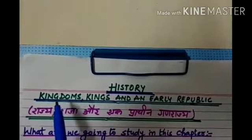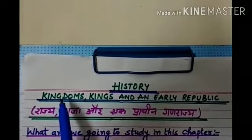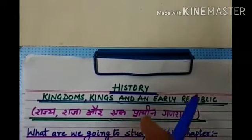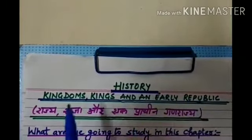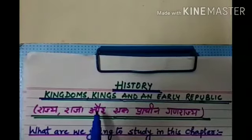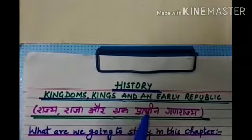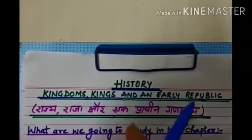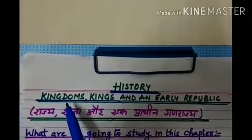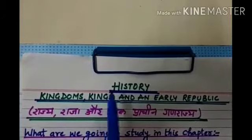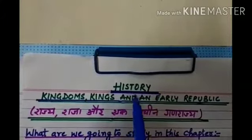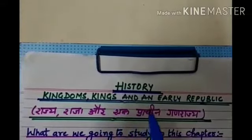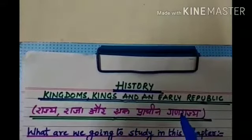Today we will start the chapter that is Kingdoms, Kings and an Early Republic — Raj, Raja and Prachin Ganraj. So today we will start the chapter: Kingdoms means Raj, Kings means Raja, and an Early Republic means Prachin Ganraj.